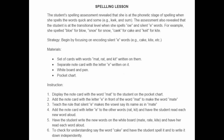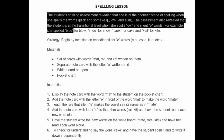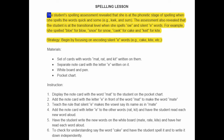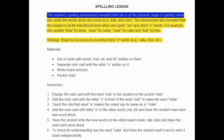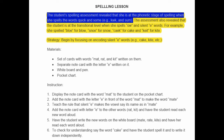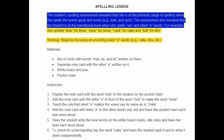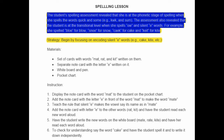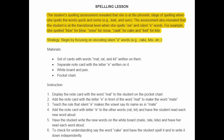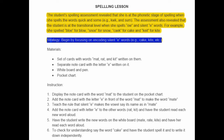What you see on your screen now is the solution — the answer. It's not perfect; there are some minor issues I need to resolve. The student spelling assessment revealed that she is at the phonetic stage of spelling when she spells the words quick and some. The assessment also revealed that the student is at the transitional level when she spells O-W and silent E words. For example, she spelled B-L-O-E for blow, S-N-O-E for snow, C-A-K for cake, and K-I-T for kite. Begin by focusing on encoding silent E words — cake, kite, et cetera. I just do a making words activity.